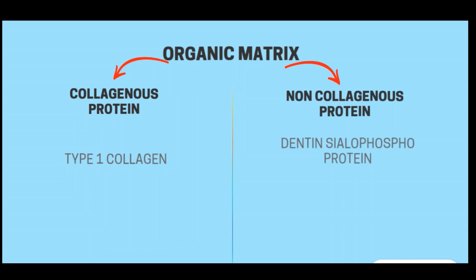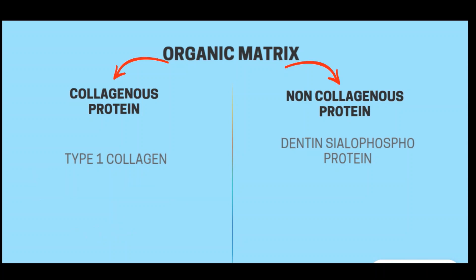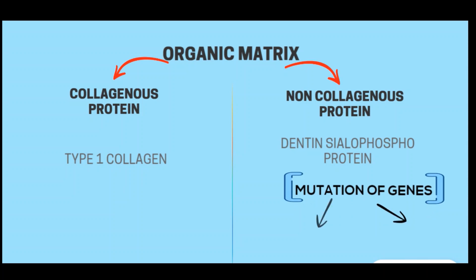The collagenous protein is mainly type 1 collagen, encoded by the genes COL1A1 and COL1A2. The non-collagenous protein is derived from dentine phosphoprotein and is encoded by the gene DSPP. Mutation of COL1A1 and COL1A2 genes results in type 1 dentinogenesis imperfecta, while mutation of the DSPP gene results in type 2 and type 3 dentinogenesis imperfecta.